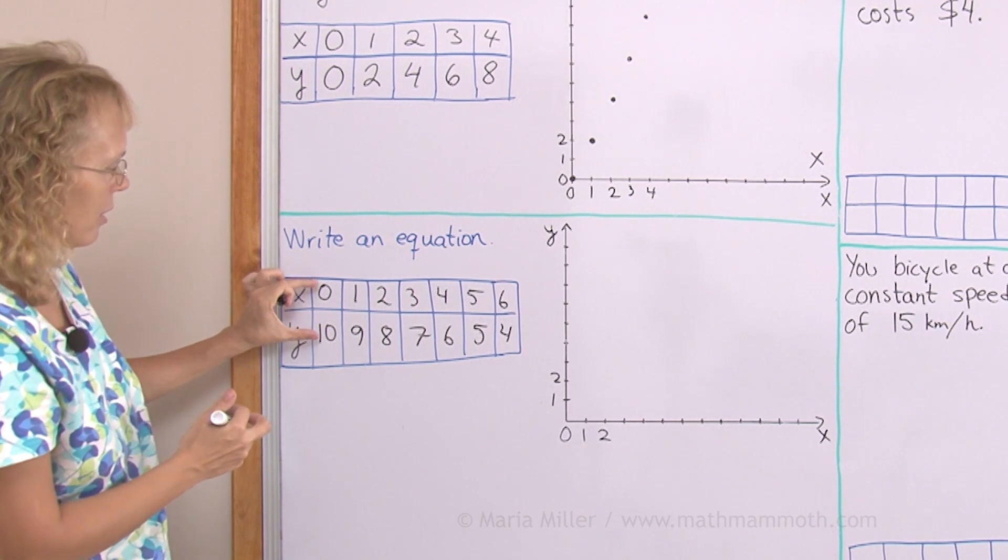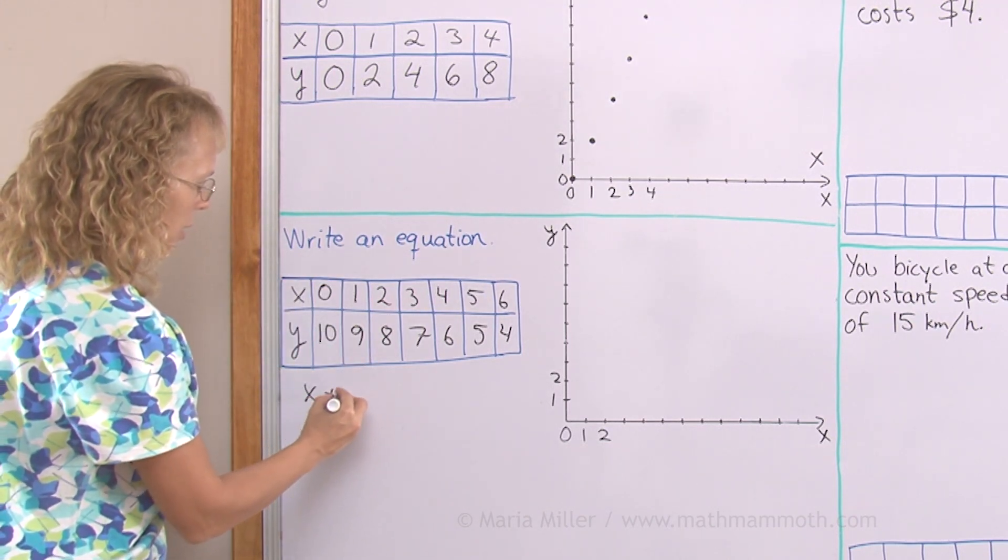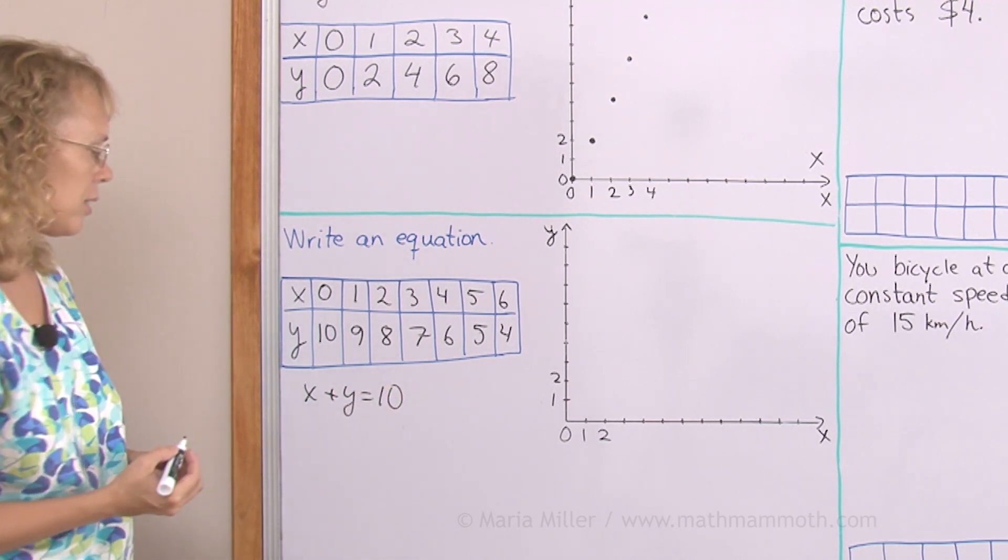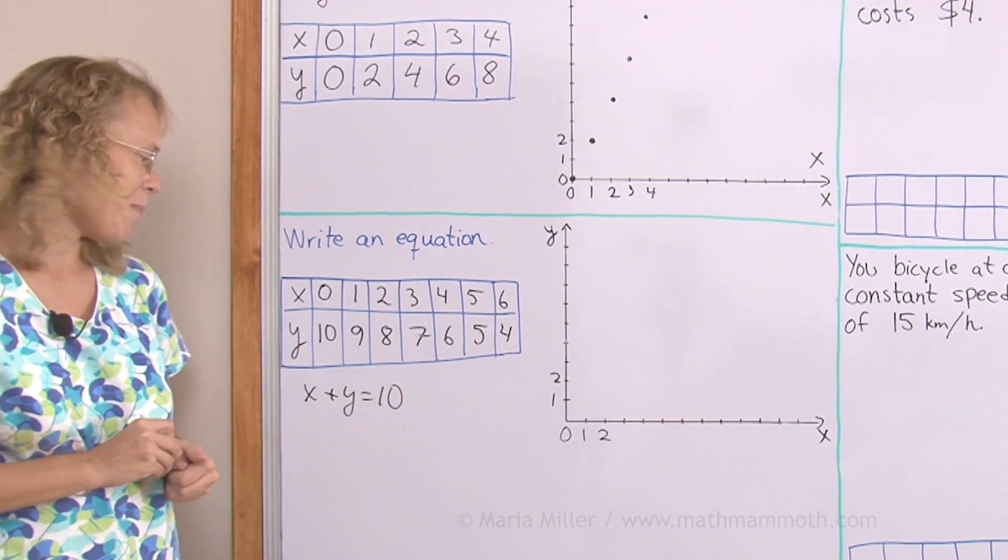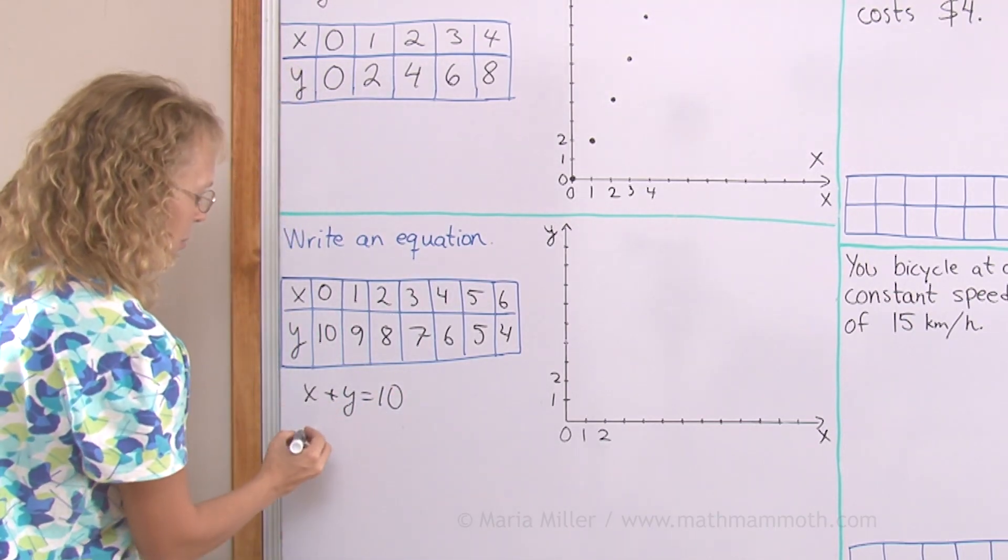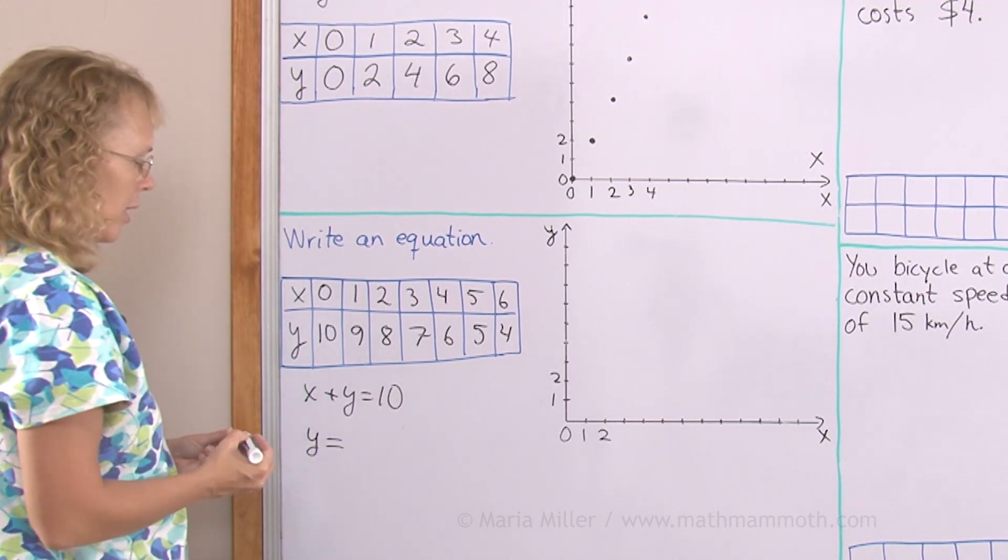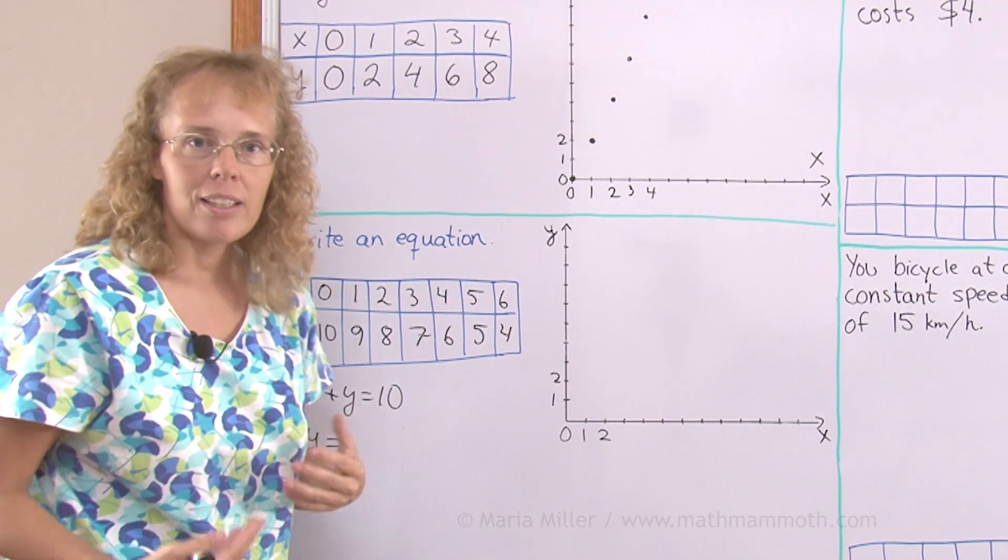It is that if you add these two you always get 10. So this is the relationship. x plus y equals 10 all the time. Now I can also write it in this way because it is very customary to write it as y equals something. In other words, how do you get y if you have x?